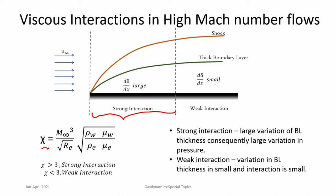In weak interactions, the change in boundary layer thickness is relatively small, and therefore the effect on pressure is also relatively small. Strong interactions are close to the leading edges, where you have a large change in boundary layer thickness. This is one kind of interaction which happens in high Mach number flows due to viscous effects and thick boundary layers.